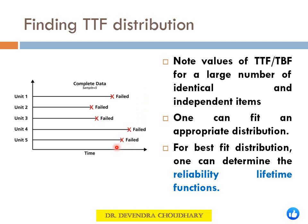To determine an appropriate distribution, we put a large number of identical and independent components into operation under specified conditions. For each component, we determine the time to failure data. This time to failure data takes different values and behaves as a random variable. We can fit an appropriate distribution to this data by using a chi-square test, or we can use statistical software such as Minitab, Systat, and other software available in the market.